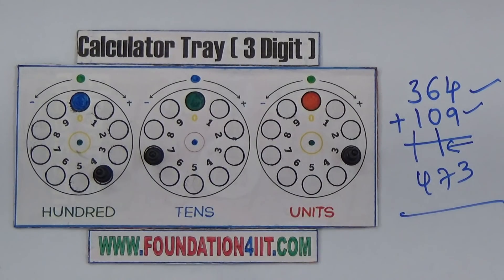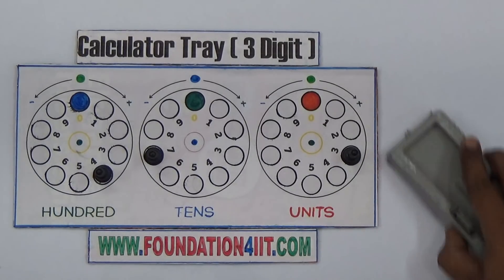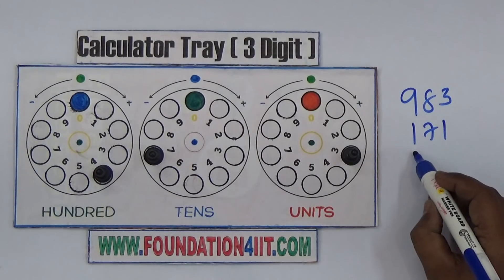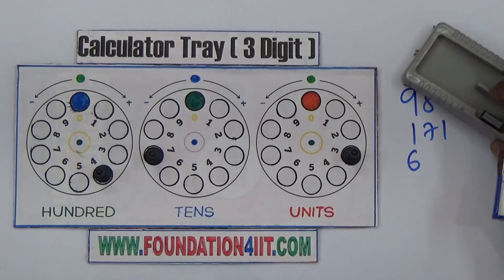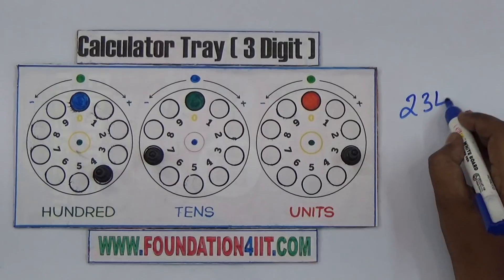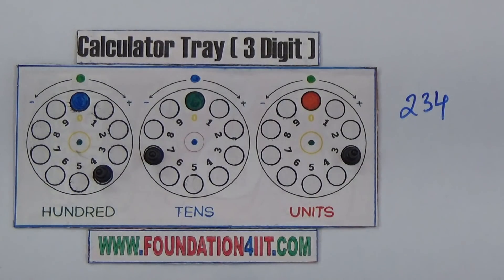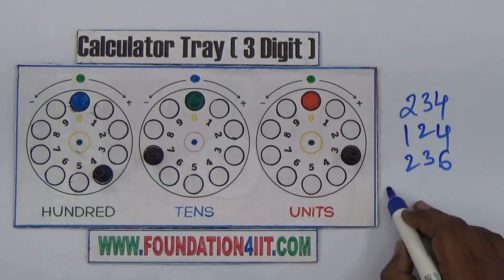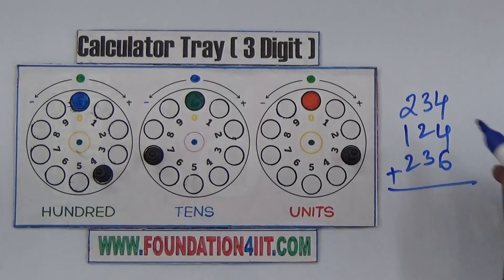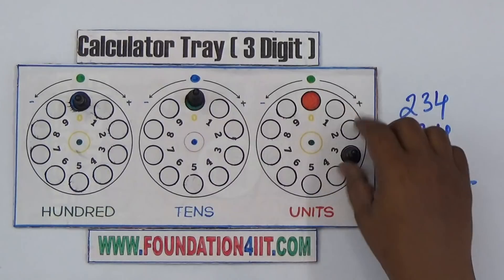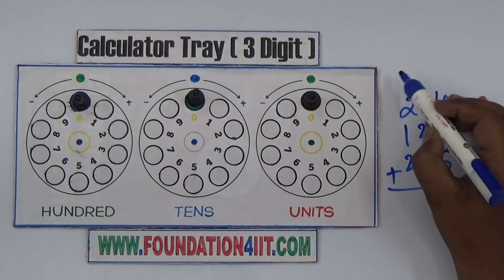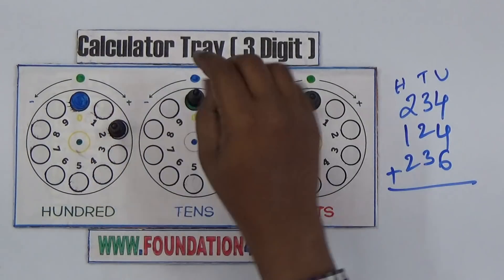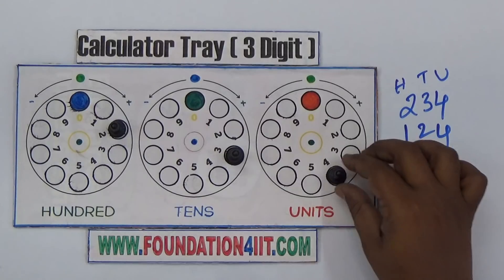You can add any number of values. Let me take a different example with bigger numbers: 983, 171 — but the maximum is only 3 digits, so the sum should not cross 999. Let me take 234, 124, and 236. I need to do the addition of these. Start with all positions at zero, then set the first number 234: hundreds to 2, tens to 3, units to 4.